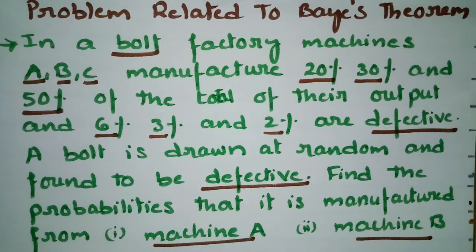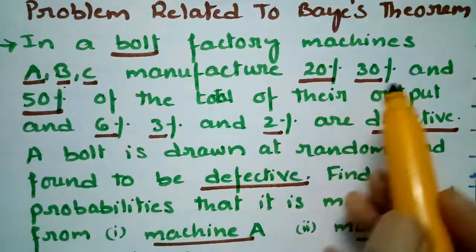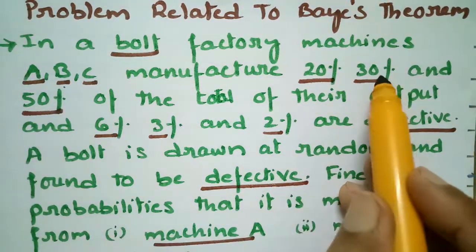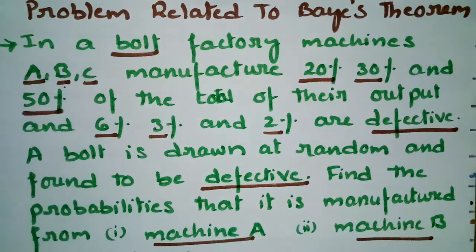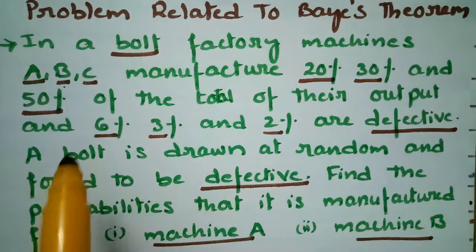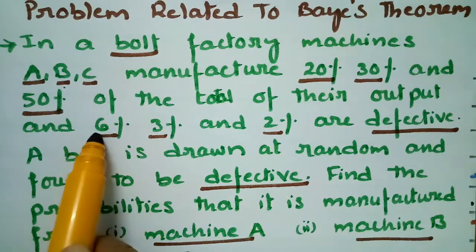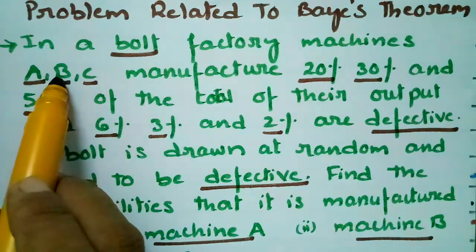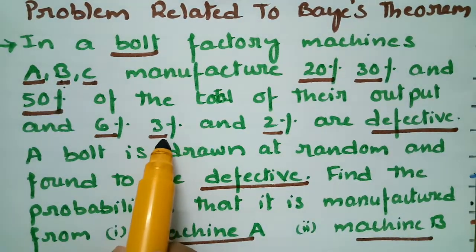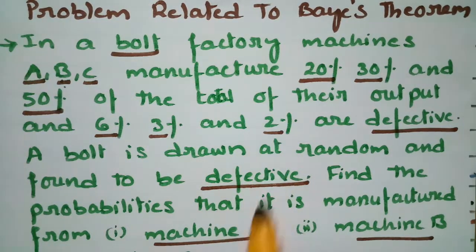In the bolt factory there are three machines A, B, and C. Machine A manufactures 20% of bolts, B manufactures 30%, and C manufactures 50% of their output. Out of them, machine A produces 6% defective bolts, machine B produces 3% defective bolts, and machine C produces 2% defective bolts.